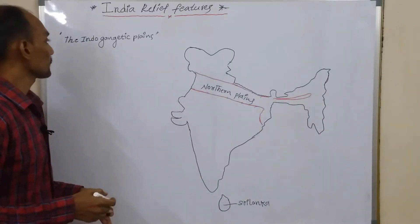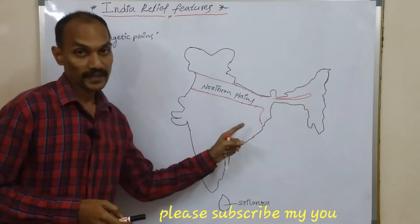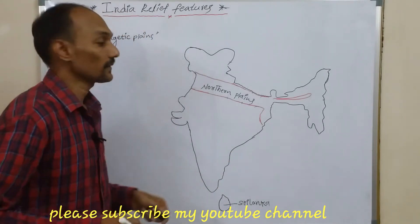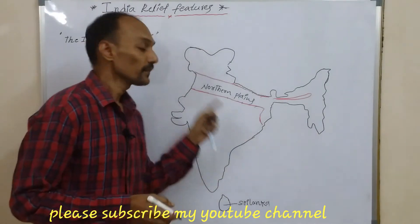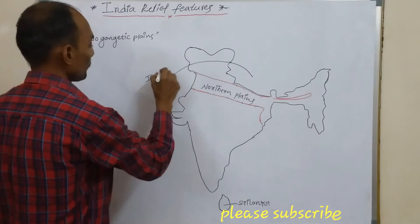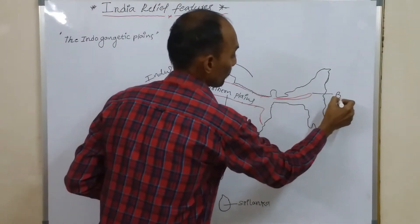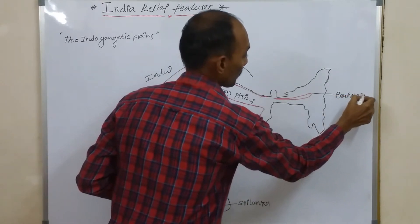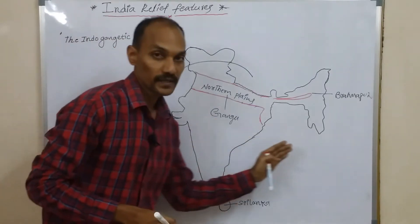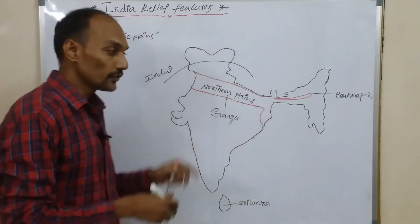We are going to discuss the Indo-Gangetic plains, also called the northern plains. These northern plains were formed due to the interaction of three Himalayan rivers: the Indus, the Ganga, and the Brahmaputra in the east. About 20 million years ago, these northern plains were a shallow basin that was gradually filled with alluvial soil by the Himalayan rivers.